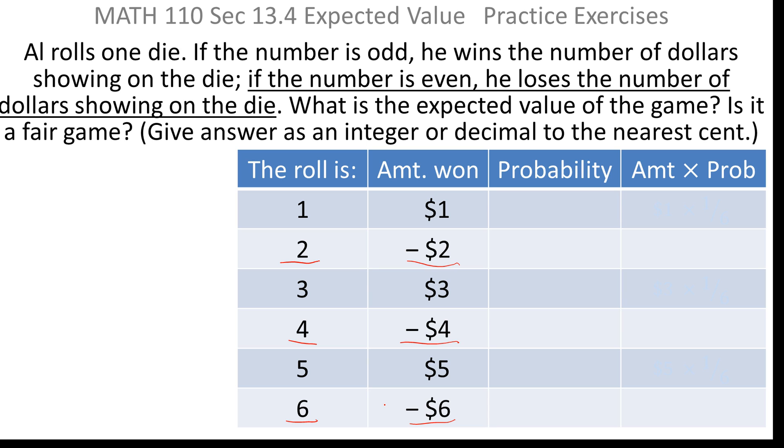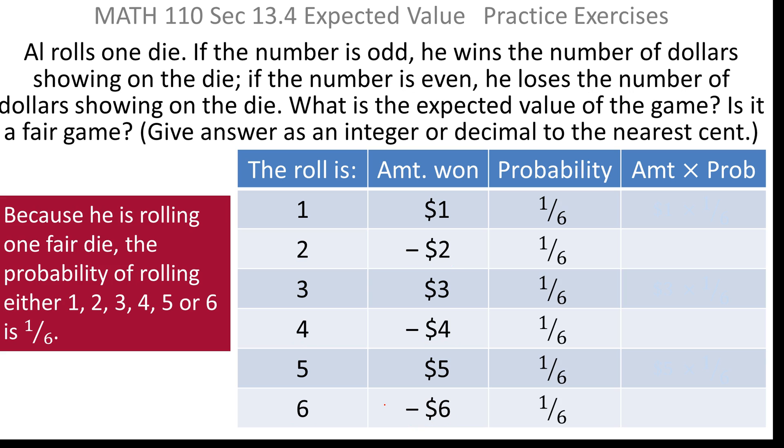Now, all we need to wrap this up is to get the probability of each of those things happening, but that's easy. You're rolling a die, and each die face has a chance of one-sixth of coming up, if it's a fair die.